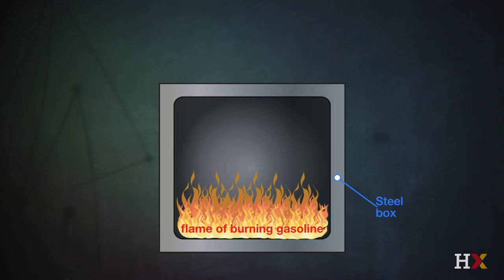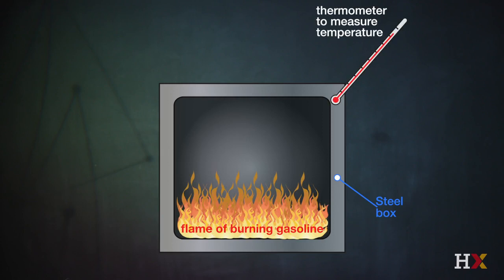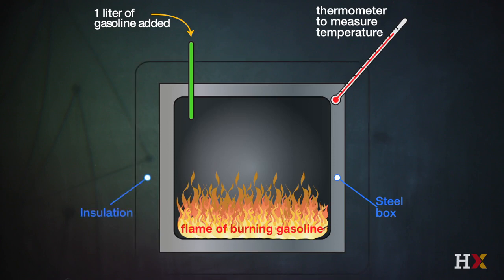Let's take a 100-kilogram steel box and add a thermometer so we can measure the temperature — in particular, the rise in temperature as the fuel burns. We want to add exactly one liter of fuel and measure the change in temperature of that box. We also have insulation around the outside that traps all of the heat generated in that chemical reaction within the steel structure of the box.